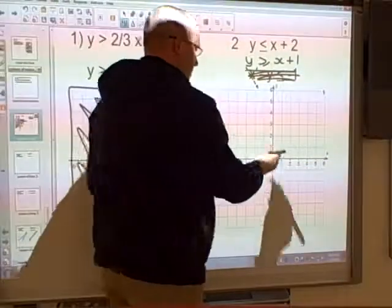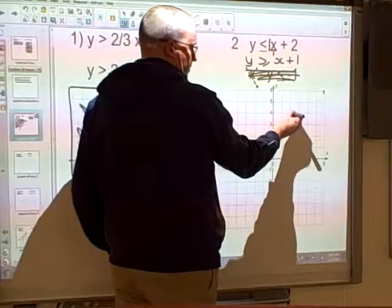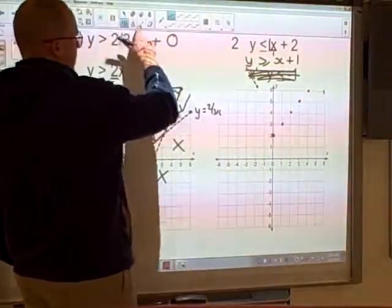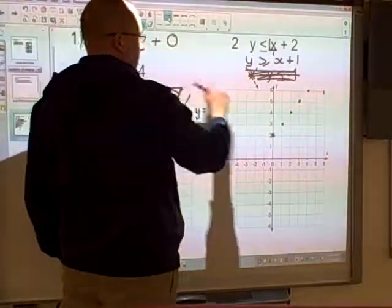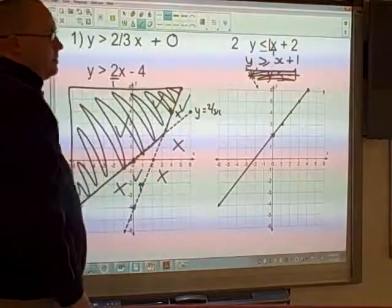And now I can start graphing this. So intercept of 2, slope of 1, so 1 over 1, so rise 1, run 1. And as there's an equal sign here, that tells me that I'm going to be using a solid line. And there's my first line done.